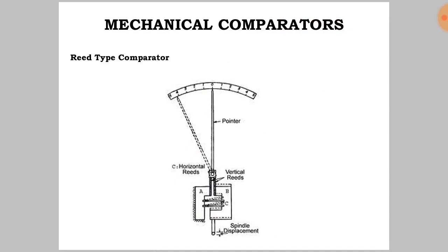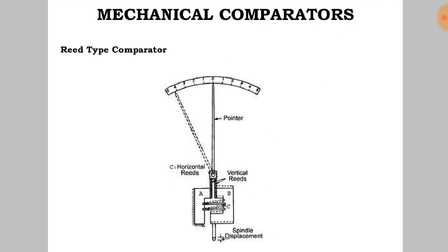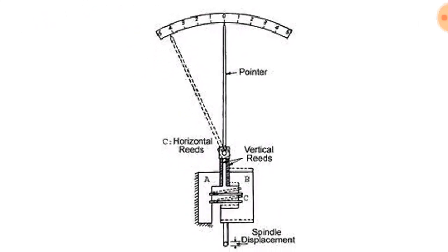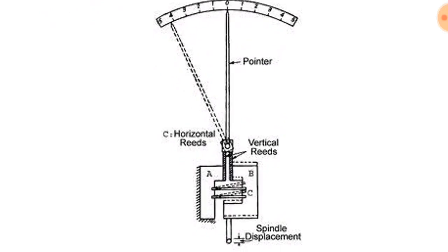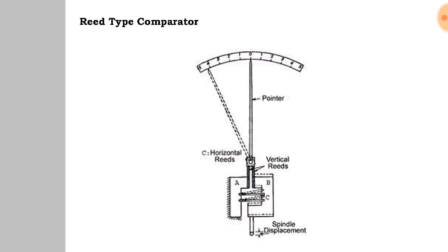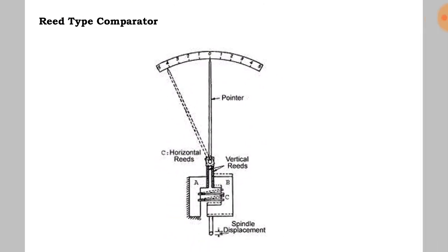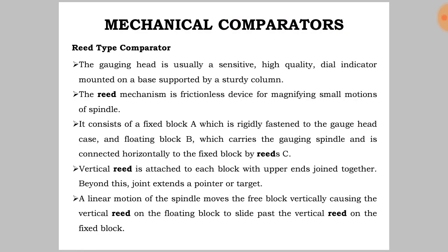This is the diagram showing the reed type comparator, containing horizontal reeds, vertical reeds, spindle displacement, pointer, and a scale.